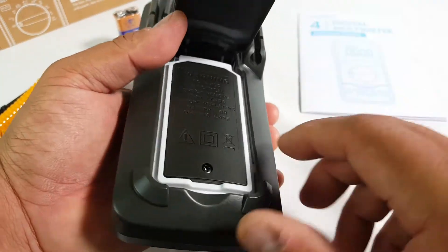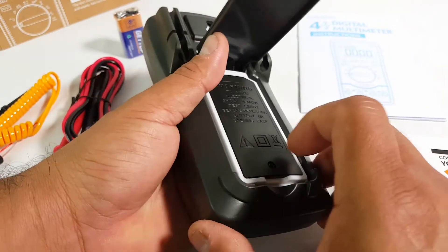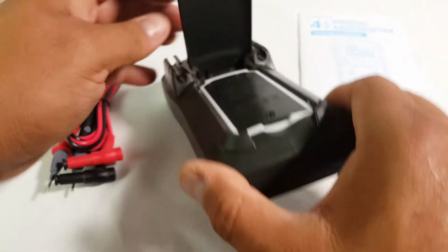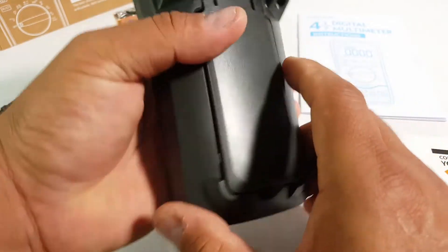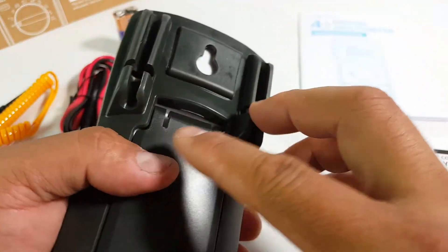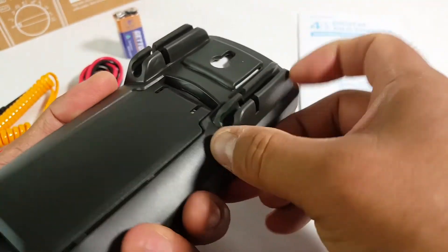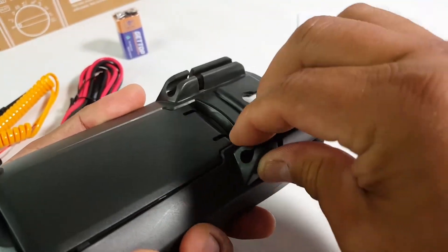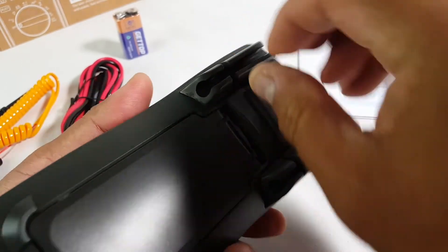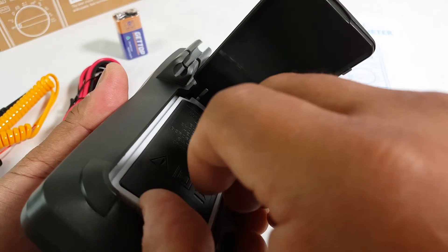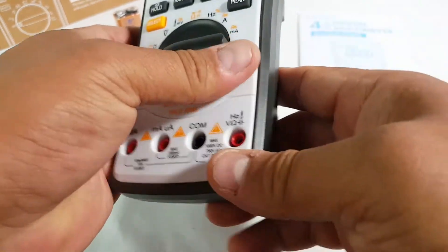So go ahead and put the battery on by taking the screw out. We have this slot here. This is rubber material over here. Very nice.